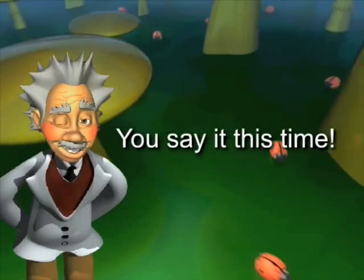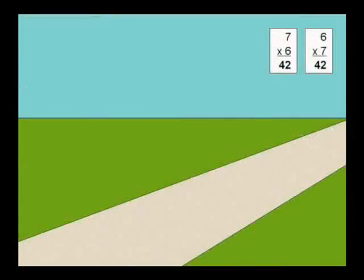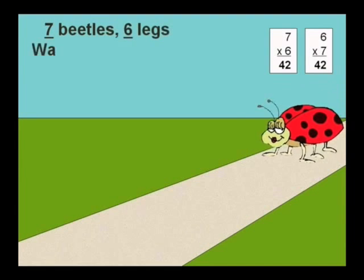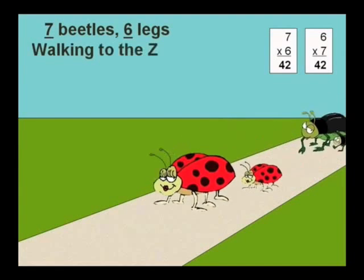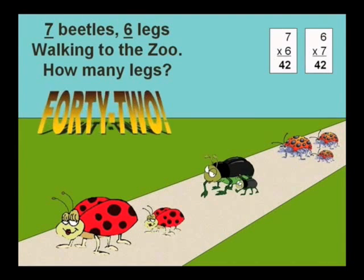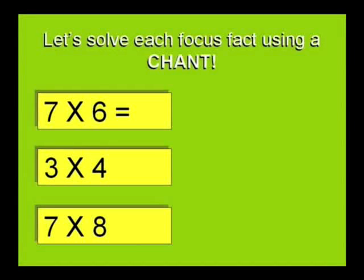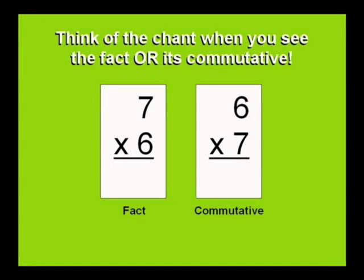You say it this time. Seven Beetles, 6 legs, walking to the zoo. How many legs? 42. Think of the Chant when you see the fact or its commutative.